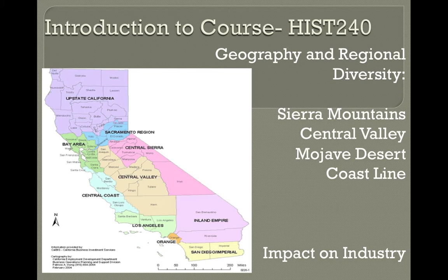The Mojave Desert Region impeded Spanish settlement of California for centuries, as stated earlier. Even after Spanish and later Euro-American settlement of California, only California Indians populated this region — until, of course, air conditioning was invented.